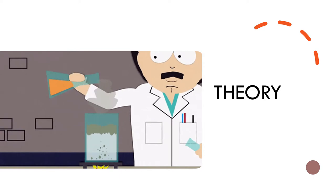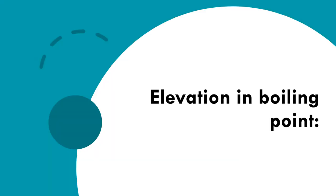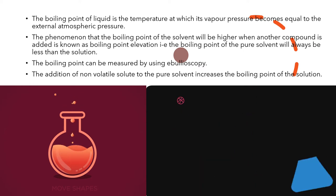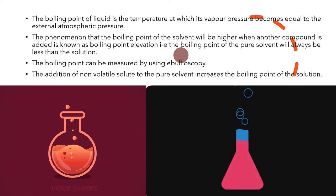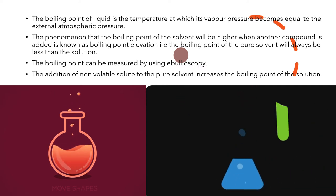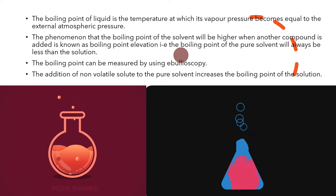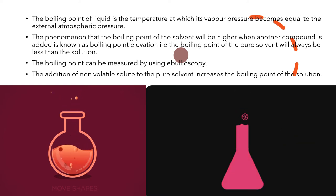First of all we will get through the theory of the experiment. The first topic is elevation in boiling point. The boiling point of a liquid is the temperature at which its vapor pressure becomes equal to the external atmospheric pressure.